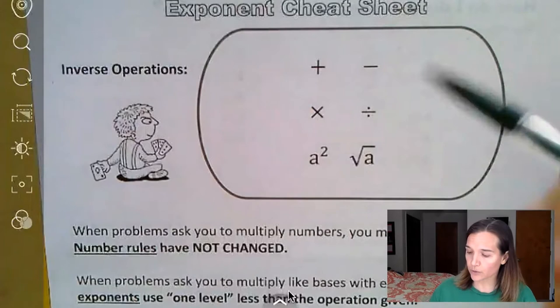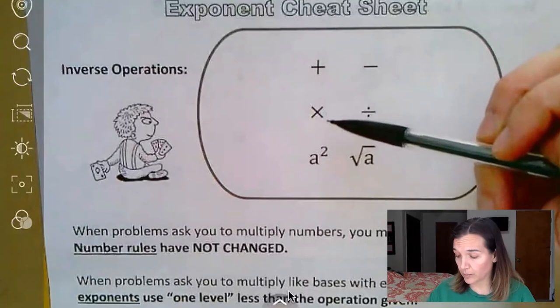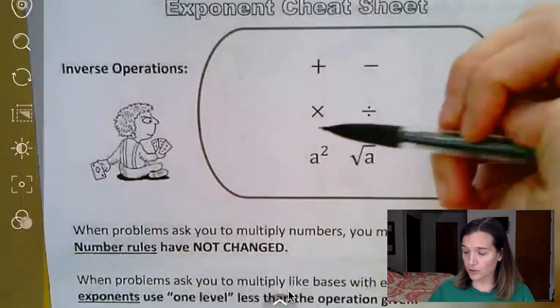So normally, if you have repeated addition, you get multiplication. If you have repeated multiplication, you get exponents. And that's where that comes from.